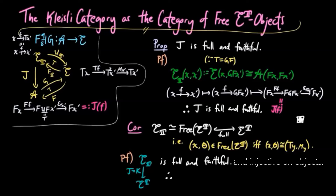Therefore, the Kleisli category is equivalent to the essential image of j, which is the essential image of k. And that is by definition the subcategory of free Eilenberg-Moore objects. And that completes the proof.